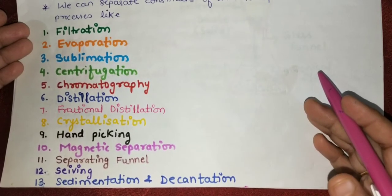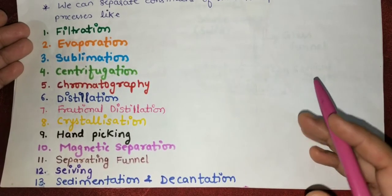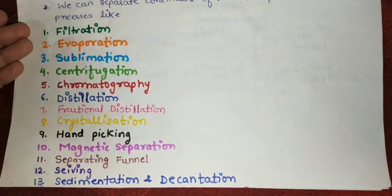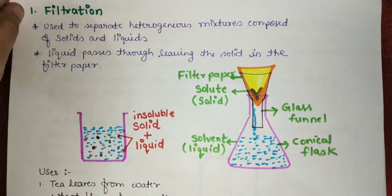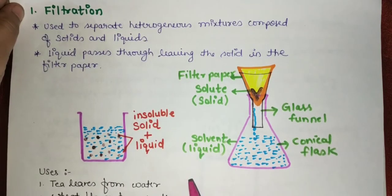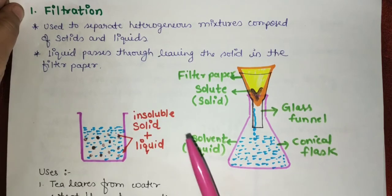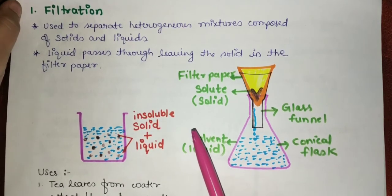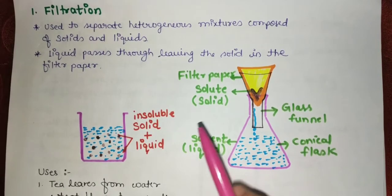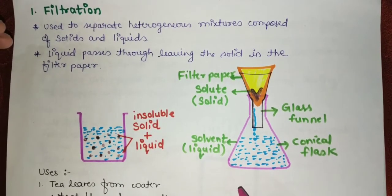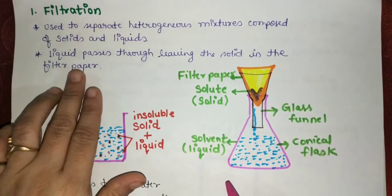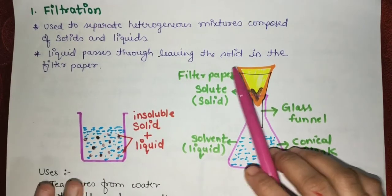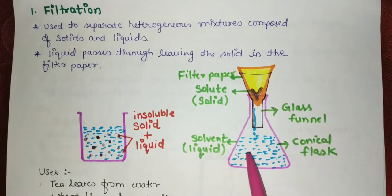Now let us discuss all the methods one by one. The first one is the filtration method. Filtration is used to separate a heterogeneous mixture composed of solids and liquids. The liquid passes through, leaving the solid behind in the filter paper.